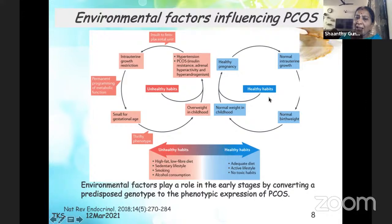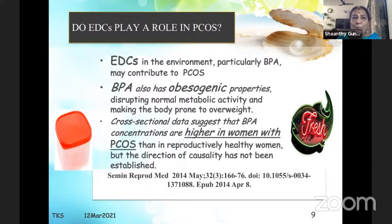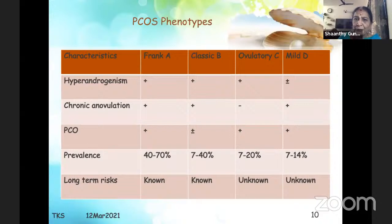Endocrine disrupting chemicals — EDCs — in the environment also play a role in PCOS. Bisphenol A, found in plastics and many other things, has obesogenic properties. Data suggests that bisphenol A concentrations are higher in women with PCOS than in others, but the direction of causality has not been established.